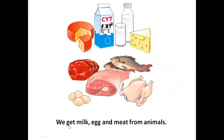We get milk, egg and meat from animals. All the things you see in this picture we get from animals: milk, eggs, meat and fish. These are all the food we get from animals. Repeat after me: we get milk, egg and meat from animals.